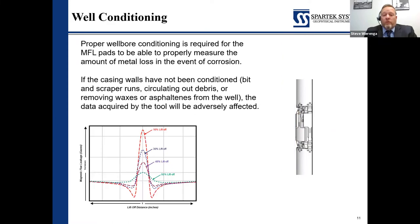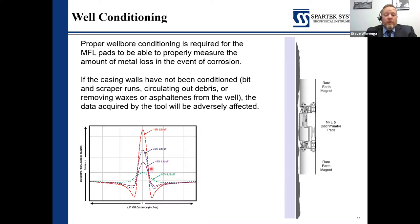Well conditioning for these types of tools is very important. Bit and scraper runs are needed, and if you've got wax or asphaltenes, you may need chemical treatments or circulations. The tool will be adversely affected if we don't have the contact we need. This chart demonstrates that with 80% liftoff, our data is very poor quality. Even a very minor liftoff exponentially increases in sensitivity and reliability. So it's crucial that the tubulars are cleaned up before these tools are deployed.